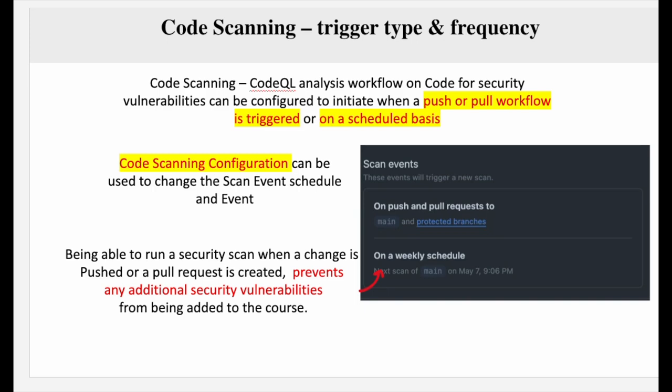To run a code scan, it is triggered, and the trigger could be multiple. It could be from a push to the repository where you're pushing a line of code, or someone has triggered a pull request, which is triggered in a manner that it identifies there is potentially vulnerable code in there.